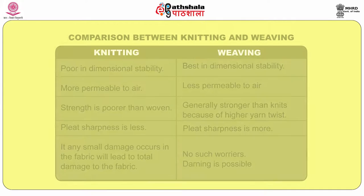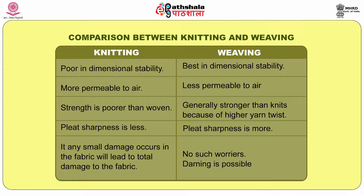The loop can be extended and when the load is released it returns to its original shape — this is called elasticity. The elasticity of knitted fabric is very high, but in woven fabric there is very little elasticity. Regarding dimensional stability, because of the open structure and looping, knitted fabric has poor dimensional stability, whereas woven fabric has very good dimensional stability due to its compact structure. Knitted fabric has very high permeability; woven fabric has less permeability.